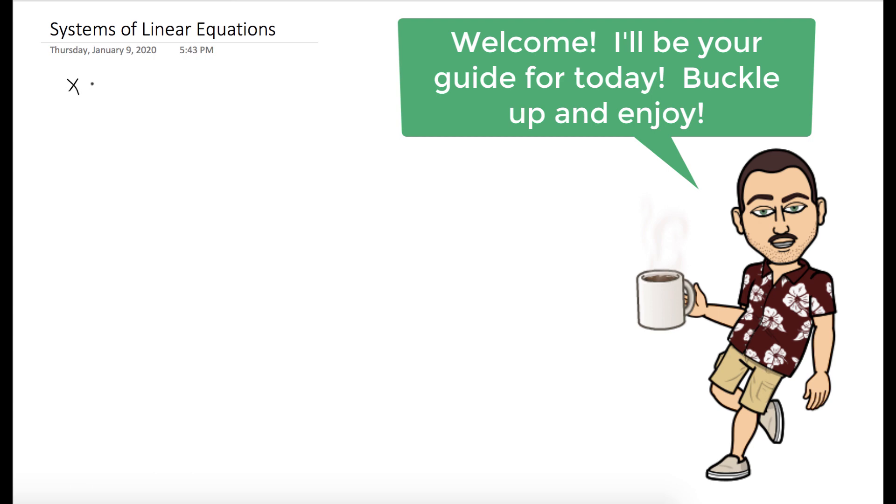So we can start by writing down the question, our system: x minus 3y equals 5, minus x plus y plus 5z equals 2, and y plus z equals 0.